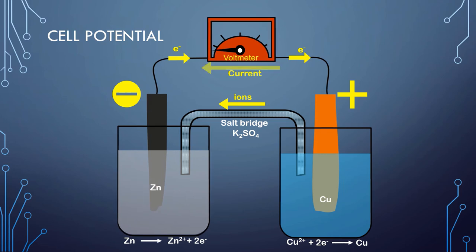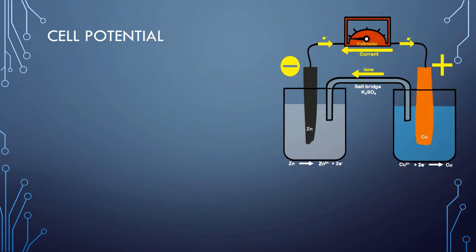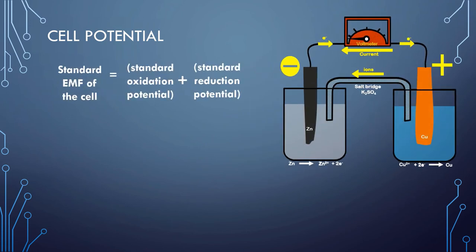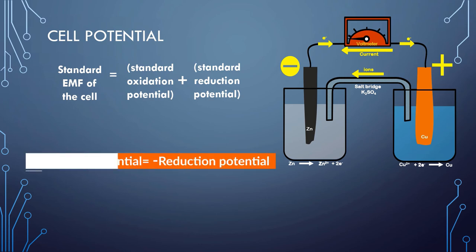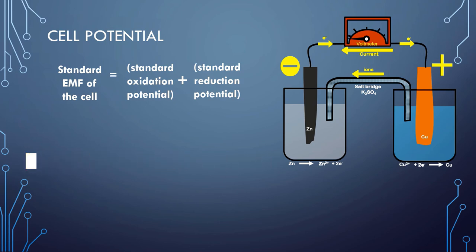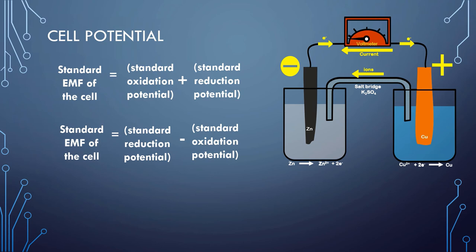The standard EMF of the cell is equal to the sum of the standard oxidation potential of the oxidation half reaction and the standard reduction potential of the reduction half reaction. Since it is common practice to express all electrical potentials as reduction potentials, and we obtain the oxidation potential by changing the sign of the reduction potential, the standard EMF of the cell equals the standard reduction potential of the reduction half reaction minus the standard reduction potential of the oxidation half reaction.